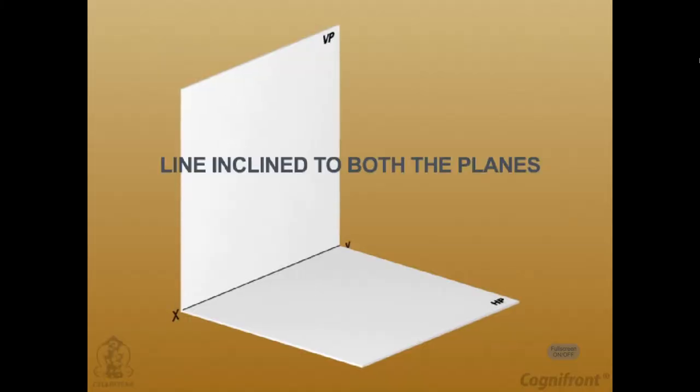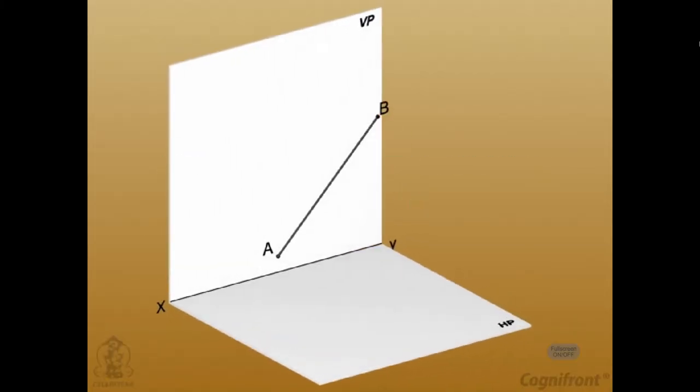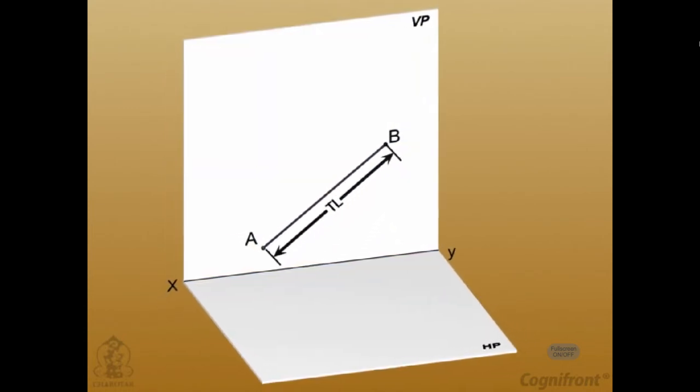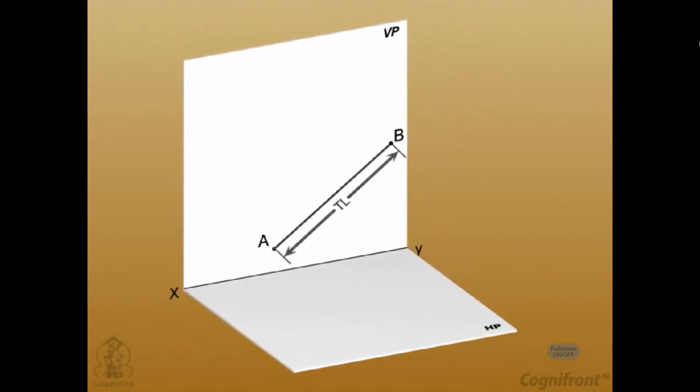Let's move further discussing a case where the line AB is inclined to both HP and VP, and its projection will be shorter in length compared to its actual length.